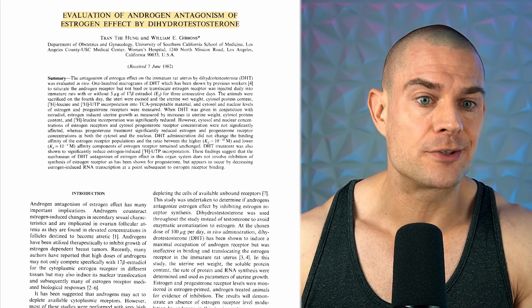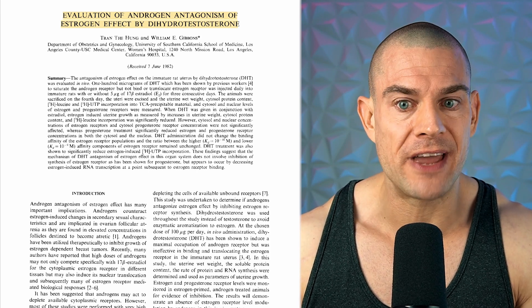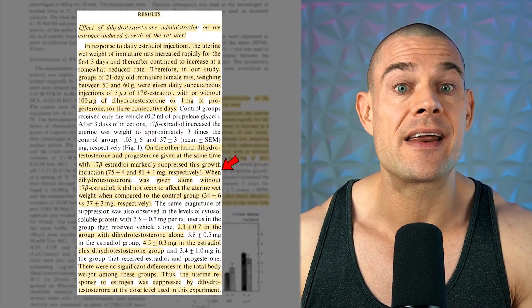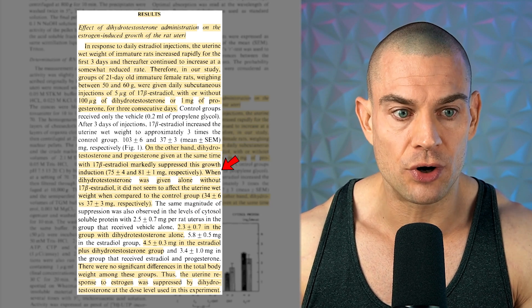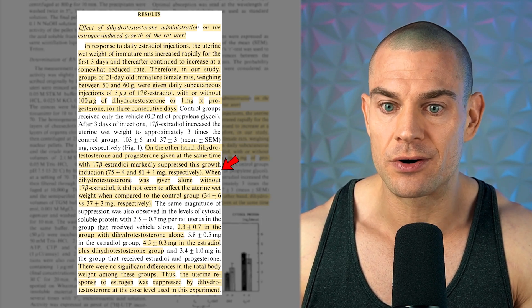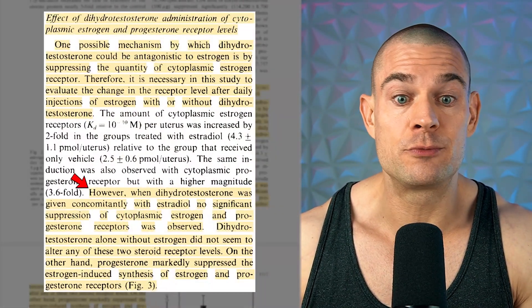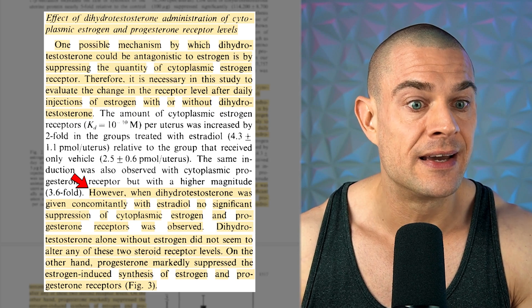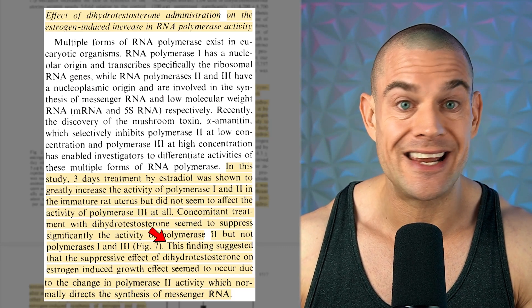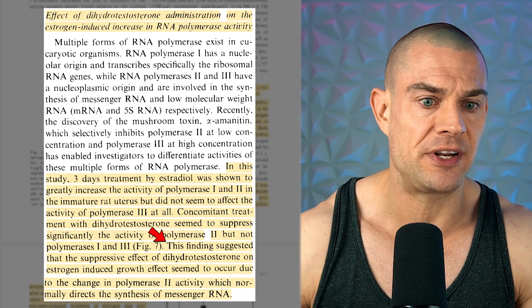This study performed by Hung et al., published October 1983 — 40 years ago — titled 'The Evaluation of Androgen Antagonism of Estrogen Effect by Dihydrotestosterone,' looked into the effects DHT has on estrogen-mediated growth of uterine tissue in female mice and how DHT might affect estrogen and progesterone receptor content and activity within uterine cells. While dihydrotestosterone doesn't seem to reduce estrogen or progesterone receptors within the cytoplasm or nucleus of these uterine cells, it does impair estrogen-mediated gene transcription and messenger RNA synthesis by reducing polymerase II activity.